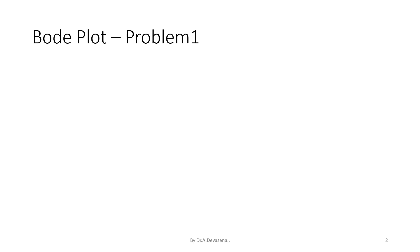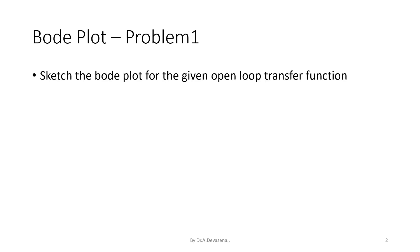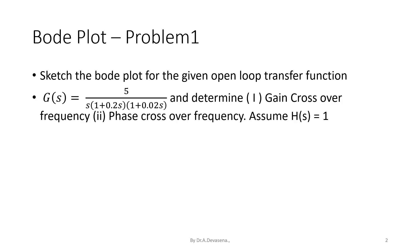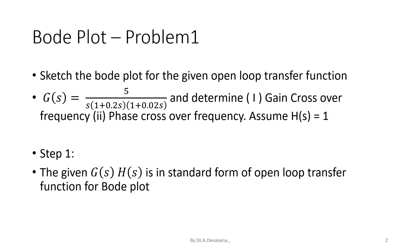Let us solve this problem. Sketch the Bode plot for the given open loop transfer function. Given G(s) = 5 divided by s into (1 + 0.2s) into (1 + 0.02s), and determine gain crossover frequency and phase crossover frequency. Assume H(s) = 1. Step 1: the given G(s)H(s) is in standard form of open loop transfer function for the Bode plot.